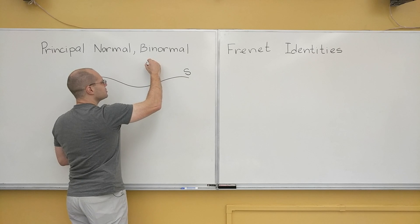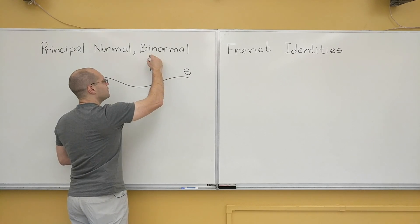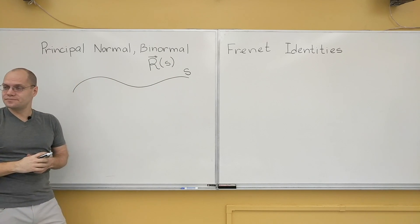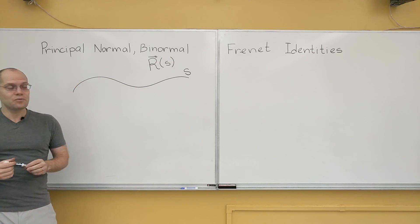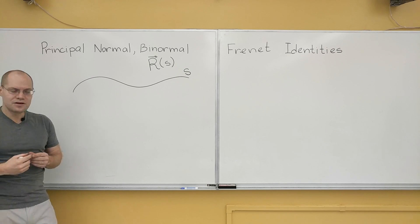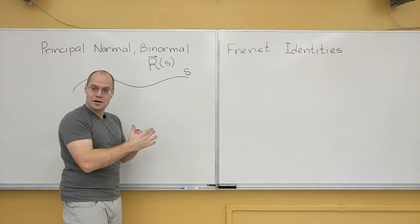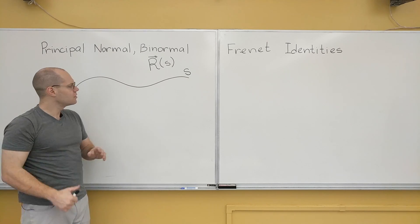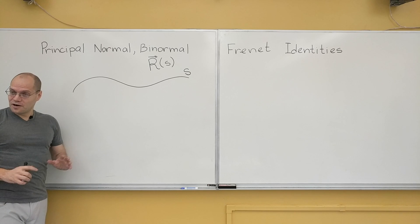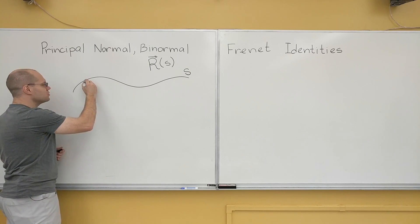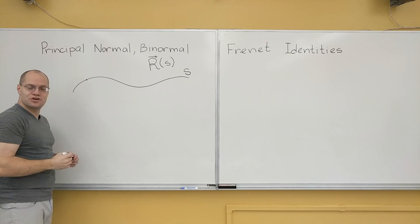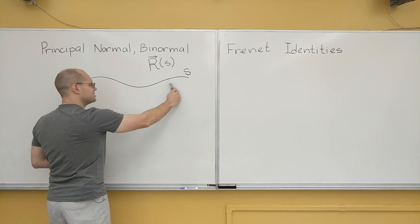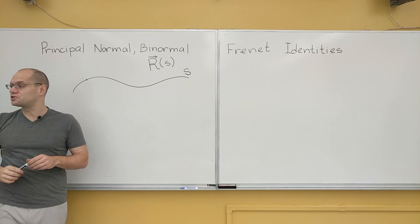And so our position vector is a function of s which we can take a derivative of. And you will recall that when we say arc length, we've removed pretty much all arbitrariness in our choice of parameterization. But there's still a little bit of arbitrariness left. For example, the point where s equals zero, the origin so to speak, is entirely up to us. And whether we choose s to be positive in this direction or in the opposite direction is also up to us.